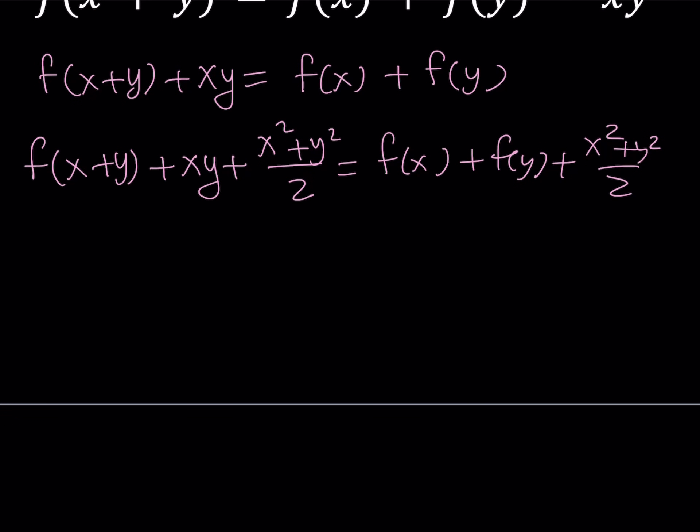And then I notice that I can split it up. On the left hand side, I can make a common denominator and write this as x squared plus y squared plus 2xy divided by 2. And on the right hand side, I can split up the x squared plus y squared over 2 and write it like this: f of x plus x squared over 2 plus f of y plus y squared over 2. So it's more evenly distributed.